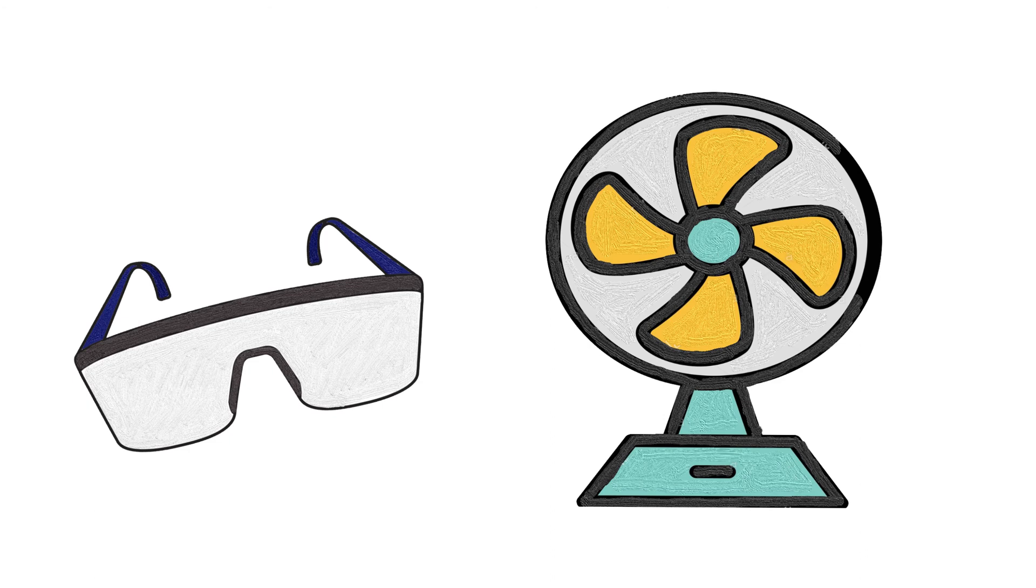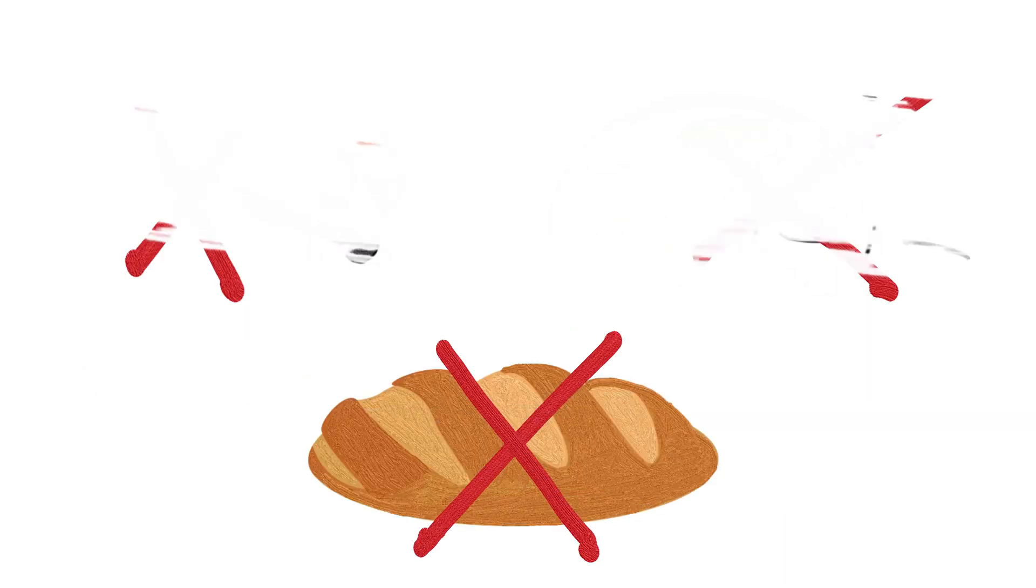You can also try running a fan to circulate the air, or wearing eye protection such as goggles while you prepare the onions. Other tricks such as lighting a match, eating bread while you chop onions, or breathing through your mouth are not as effective, if at all.